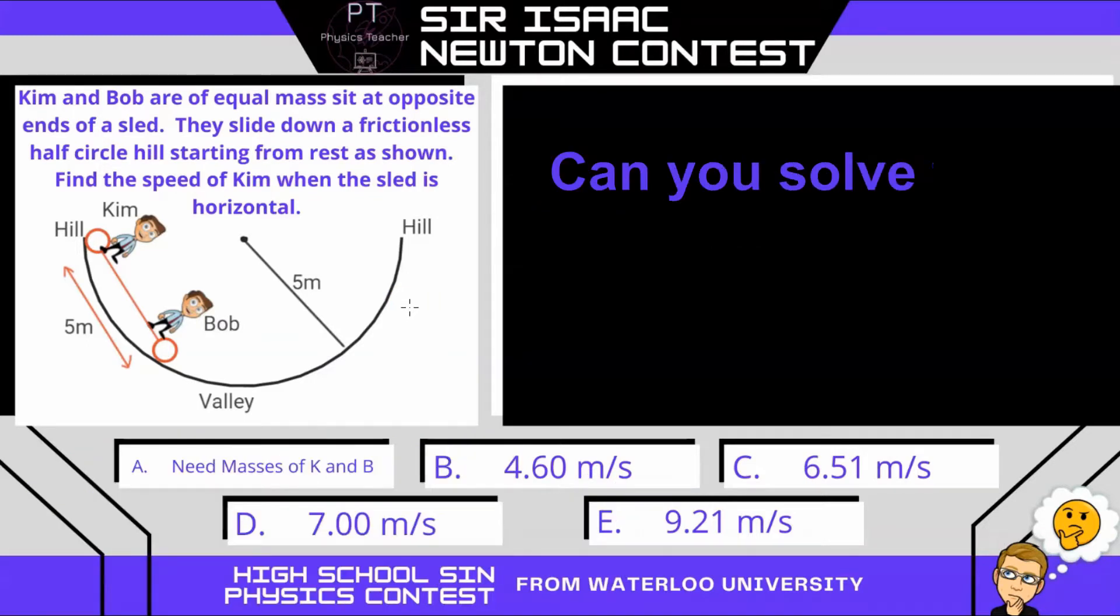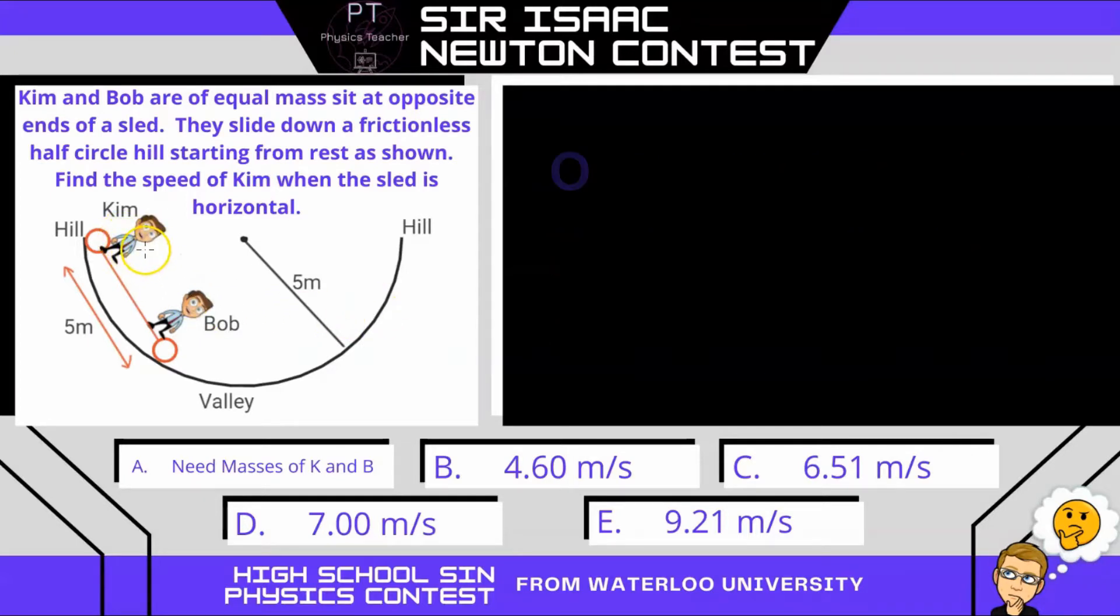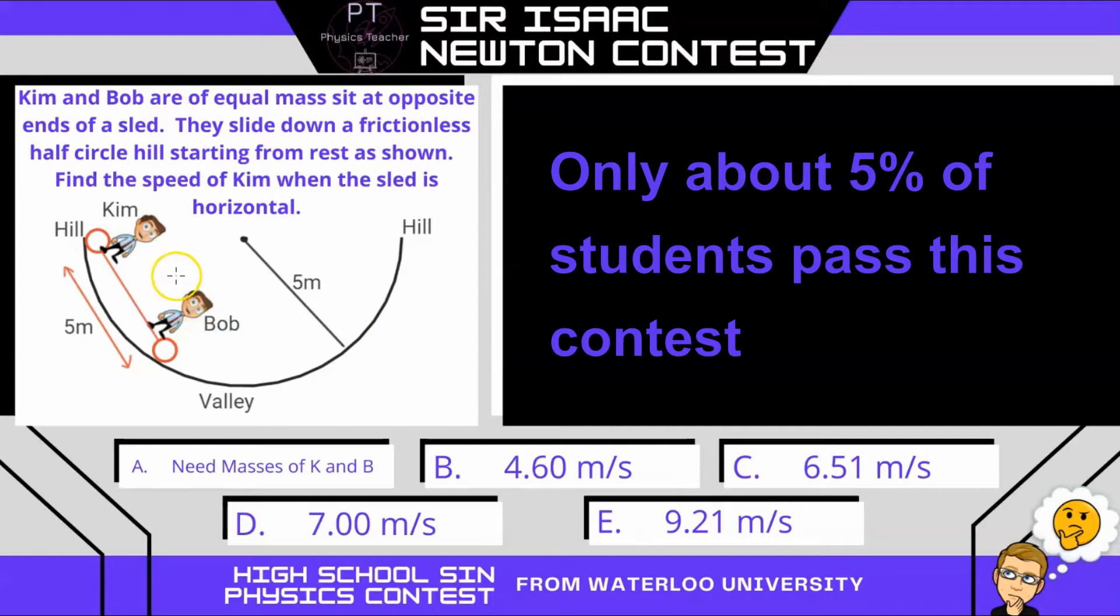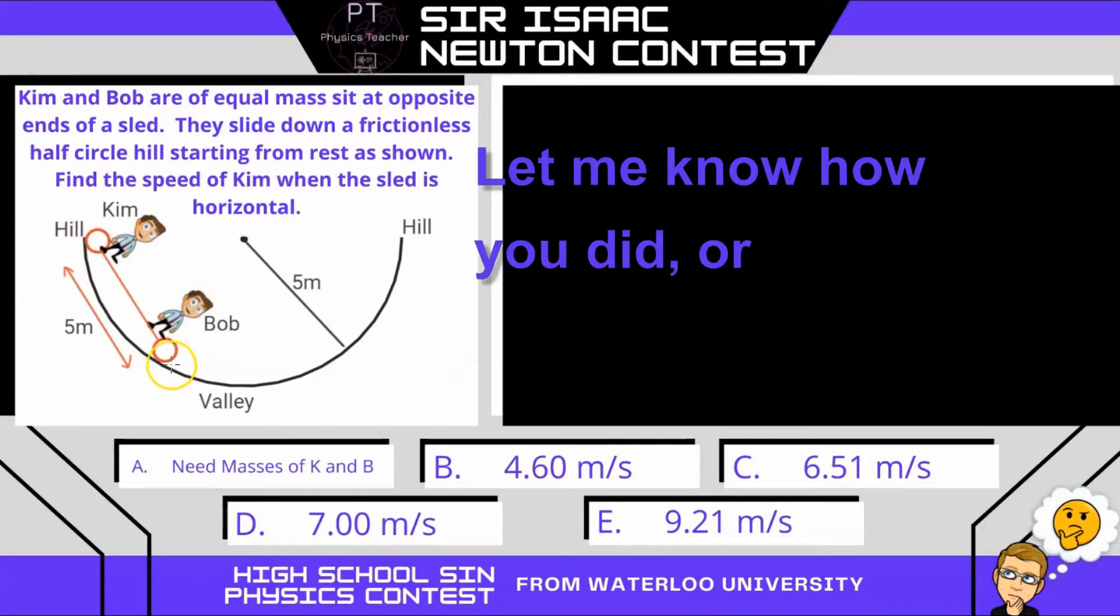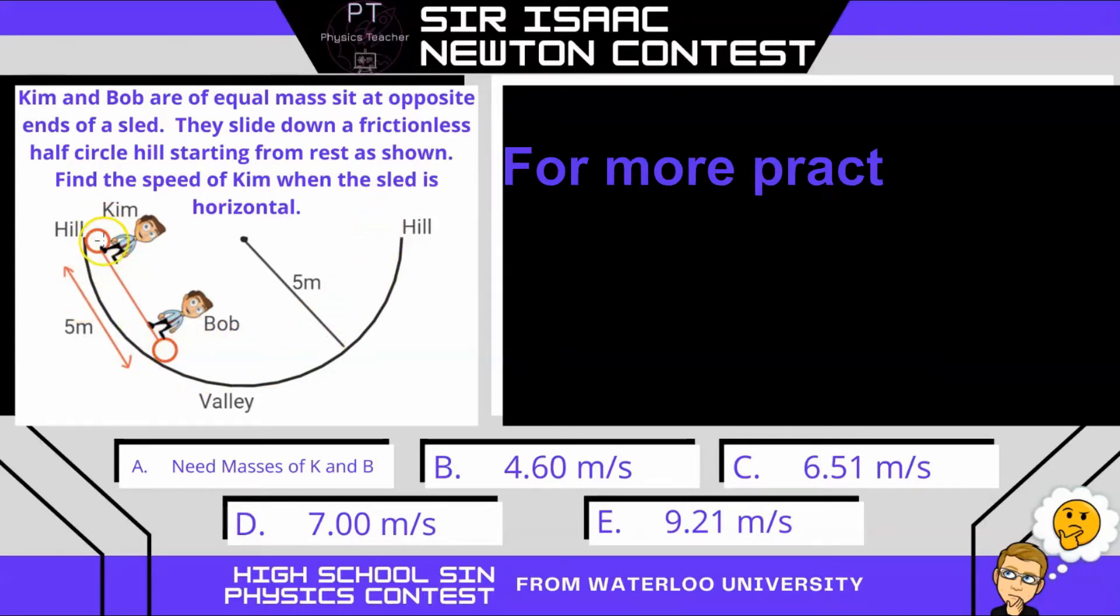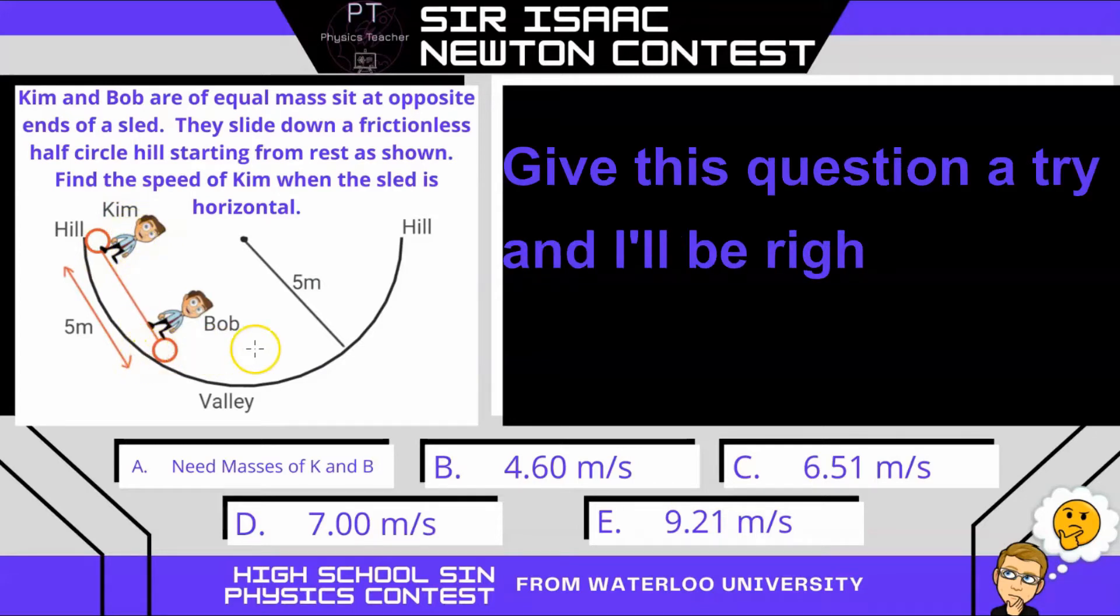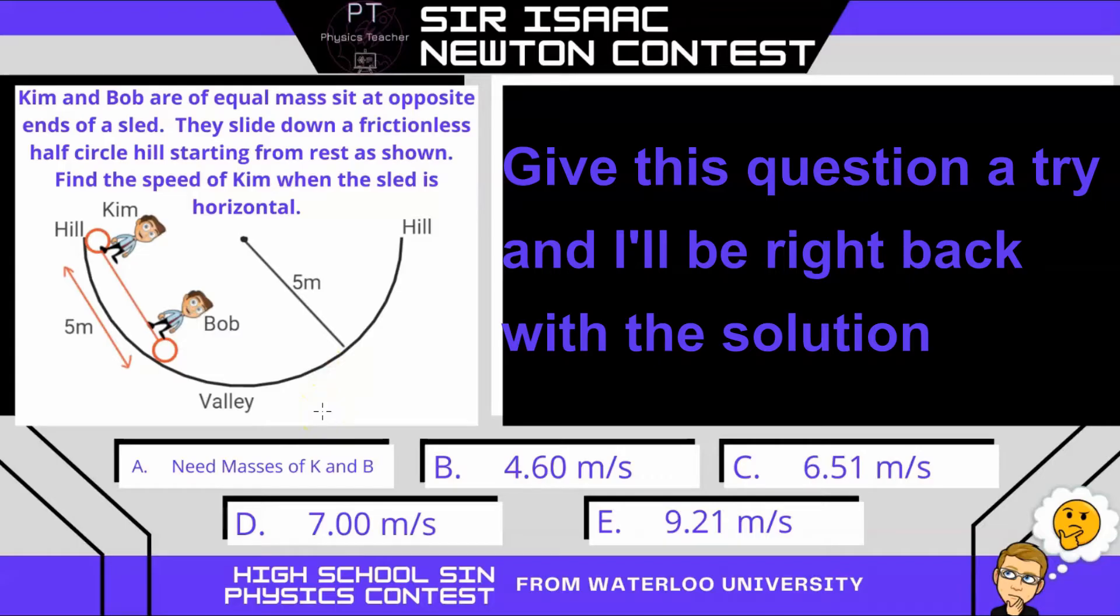This is a grade 12 physics Sir Isaac Newton contest question. In this question we have Kim and Bob of equal mass sit at opposite sides of a sled which is massless that is five meters long. They are going to slide down a frictionless half-circle hill starting from rest at this position as shown. We need to find the speed of Kim when the sled is perfectly horizontal. Give it a try and I'll be right back with the solution.